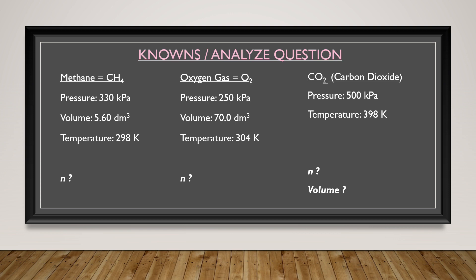Finally, carbon dioxide, which is produced along with water, has a pressure of 500 kilopascals and a temperature of 398 kelvin. The question is asking for the volume of CO2, so we will need to apply stoichiometry rules as well as the ideal gas law to determine this.